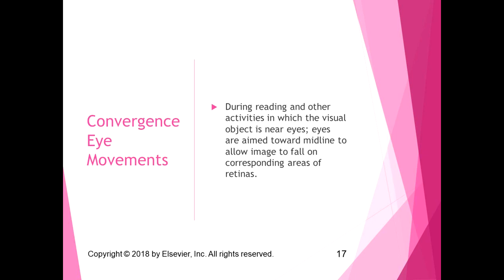When reading or doing activities where the visual object is near, the eyes are aimed toward the midline to allow the image to fall on corresponding areas of the retina, syncing the two images for clear vision. After concussions — mild or more severe traumatic brain injuries — convergence can become disordered, causing people to be unable to focus, and they may experience diplopia or blurred vision.